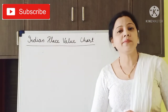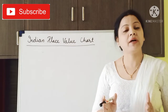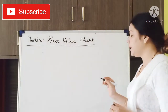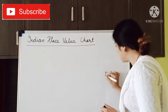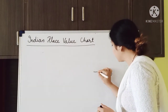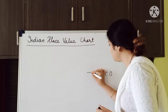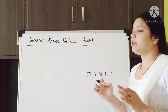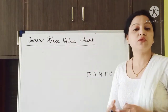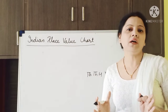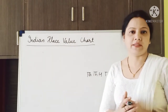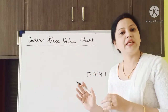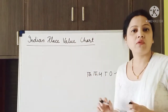To form an Indian place value chart, we have to group the numbers into some periods. Till now you already have studied about 1's, 10's, 100's, 1000's, and 10,000's places. But if we are dealing with large numbers, we have to group these places into periods.